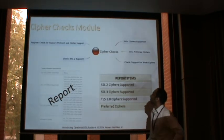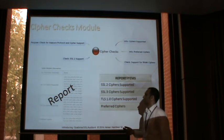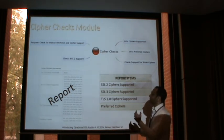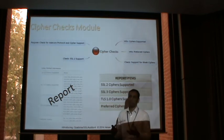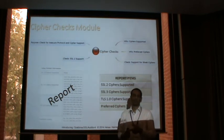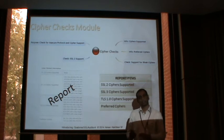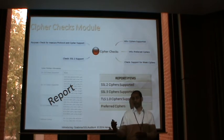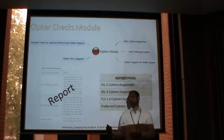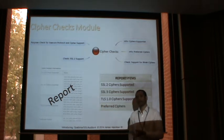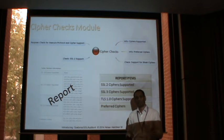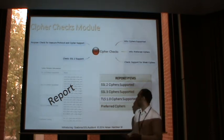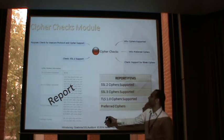Let's look at the cipher checks the tool does. It checks for the various protocols supported by the SSL service and the various ciphers supported by each protocol. It then lists the preferred ciphers for each protocol, and flags if it finds SSL version 2 or any weak ciphers enabled. This is a sample report showing the various fields.